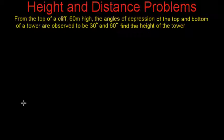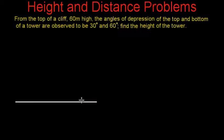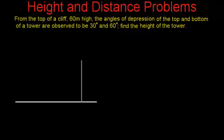Suppose we have a horizontal ground, and on this ground we have a cliff which is 60 meters tall. We have a tower somewhere, and we don't know where the tower is located, but we are given the angles of depression of the top and bottom of the tower. To measure the angle of depression from the top of the cliff, we first draw a horizontal line from the top of the cliff.